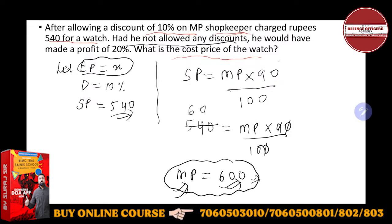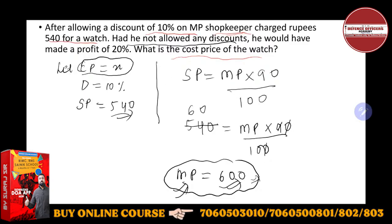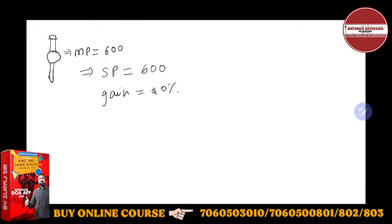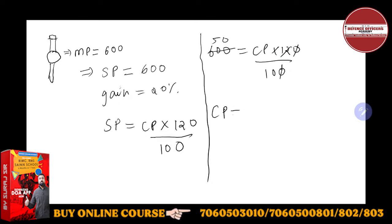He would have made a profit of 20%. It means when he sells this watch at 600, he will gain 20%. So cost price: SP is a function of CP, profit 20%, so SP = CP × 120/100. SP here is 600 because he is not giving any discount, so MP will be same as SP. So 600 = CP × 120/100. Cancelling, CP will be 500.